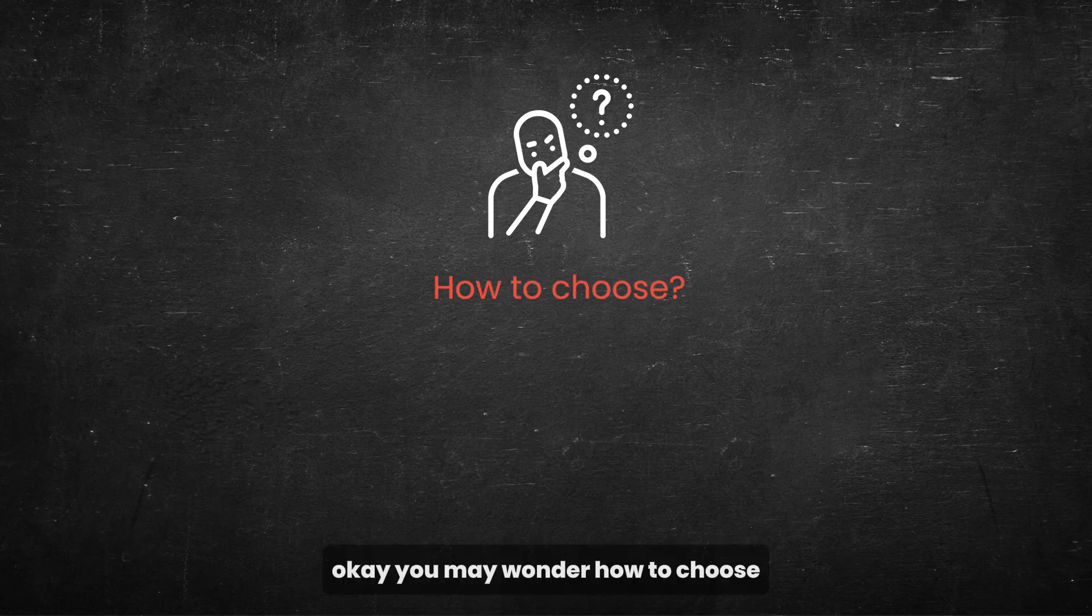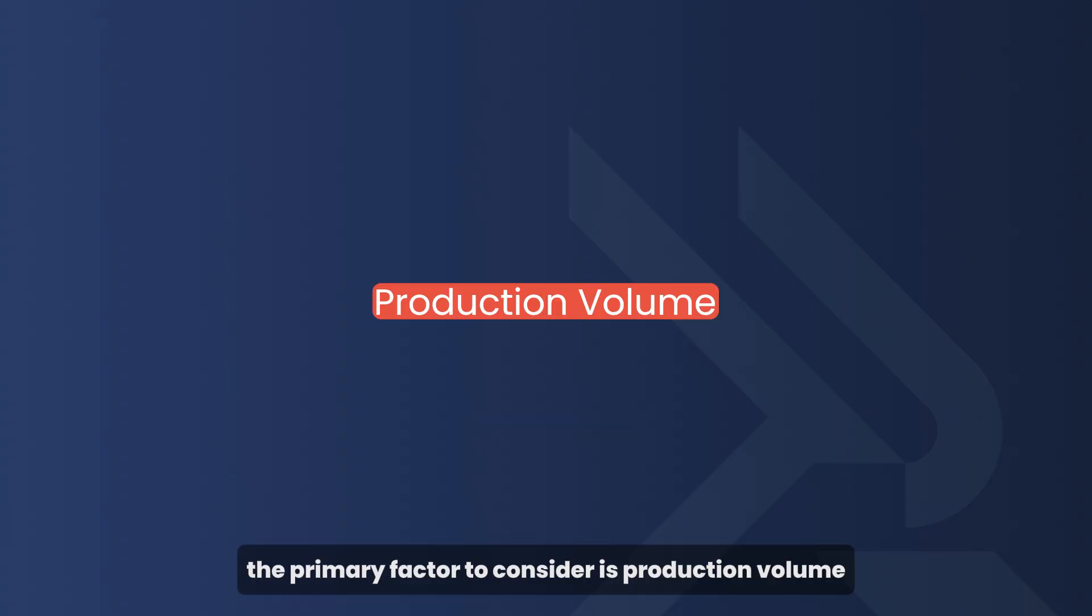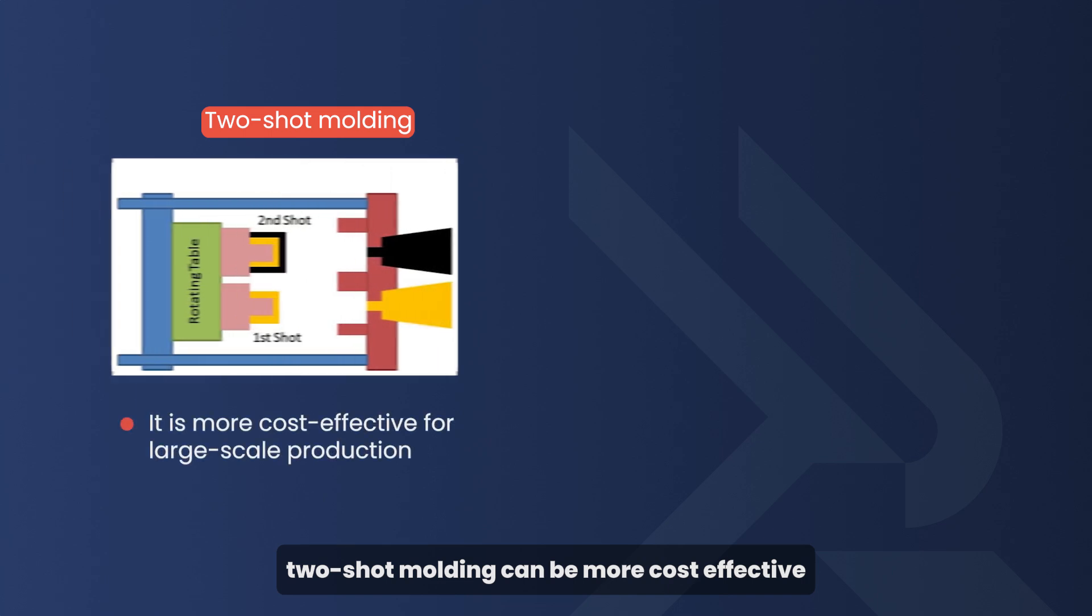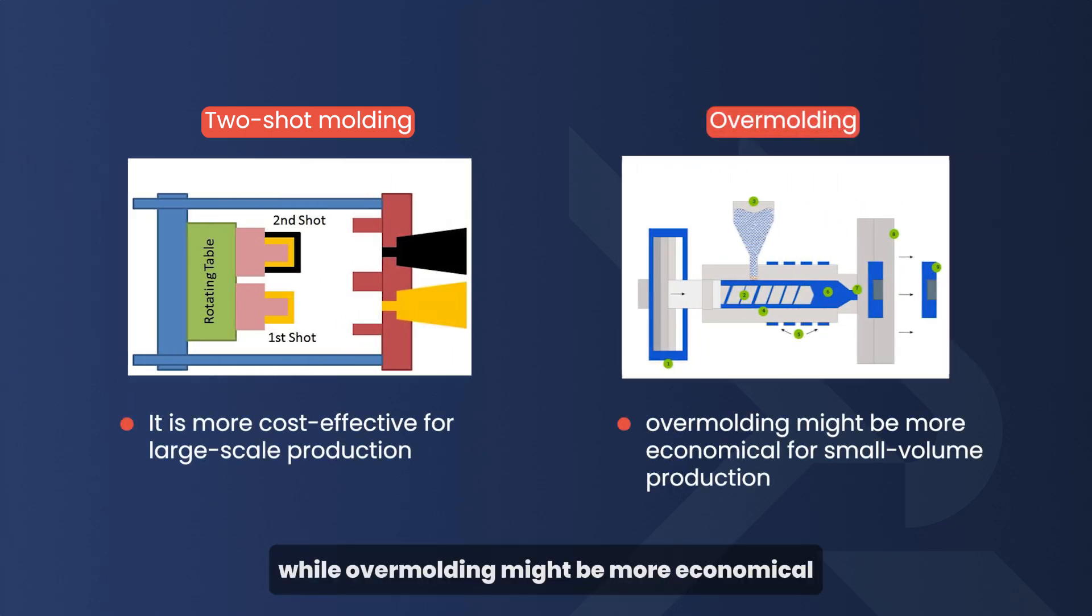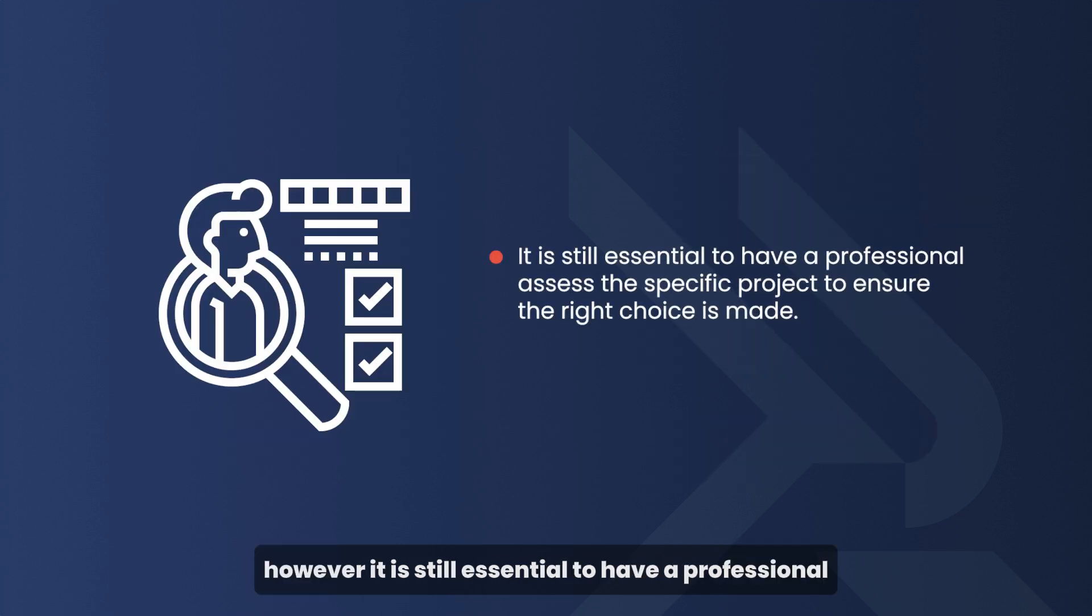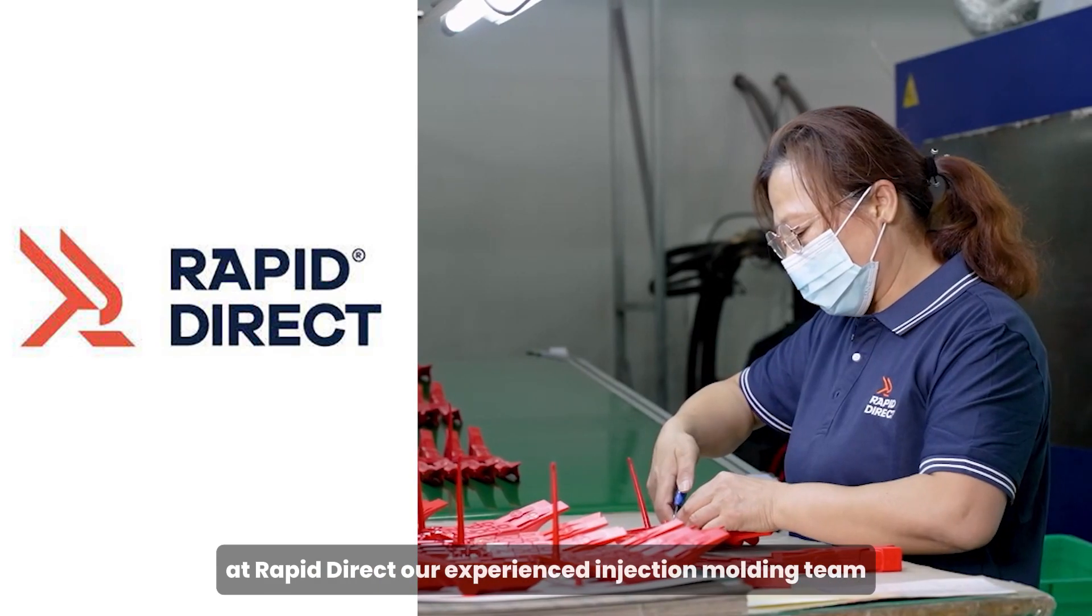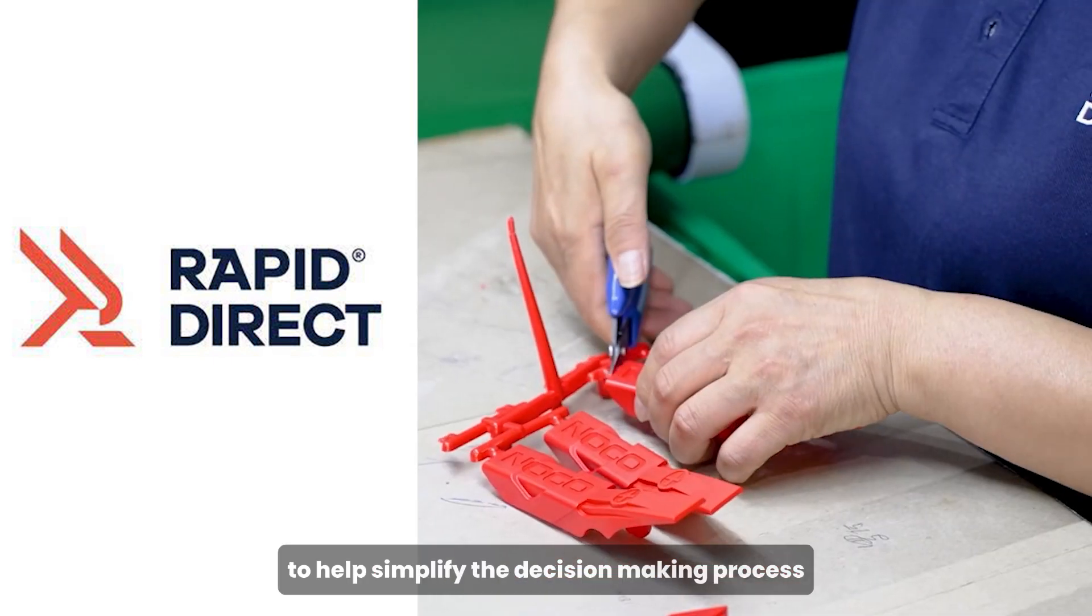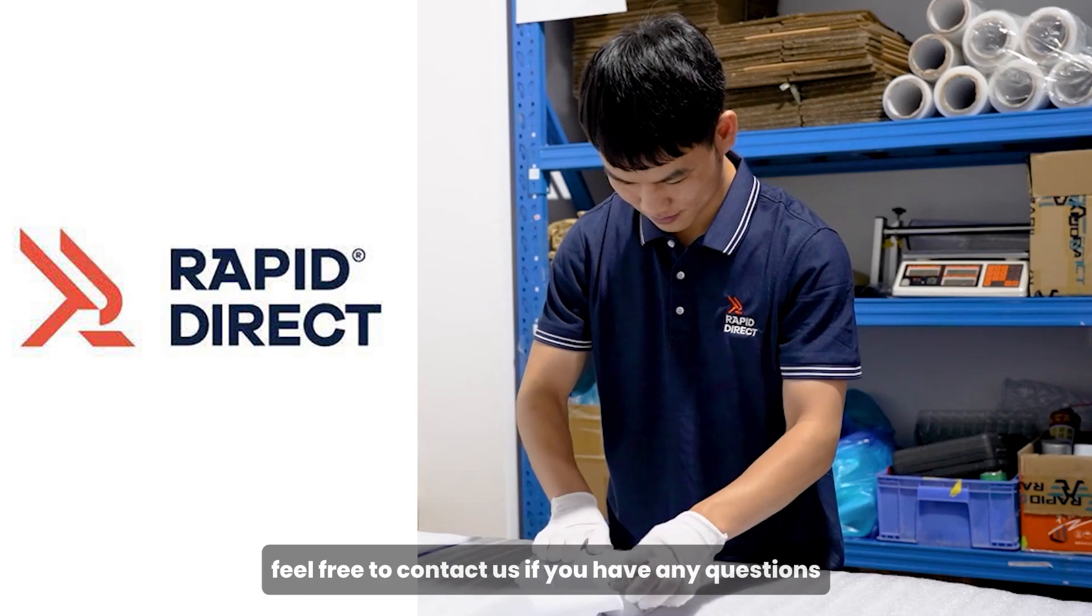You may wonder how to choose, since they are two similar processes. The primary factor to consider is production volume. Two-shot molding can be more cost-effective for large-scale production, while overmolding might be more economical for small-volume production. However, it is still essential to have a professional assess the specific project to ensure the right choice is made. At RapidDirect, our experienced injection molding team offers free consultation services to help simplify the decision-making process. Feel free to contact us if you have any questions.